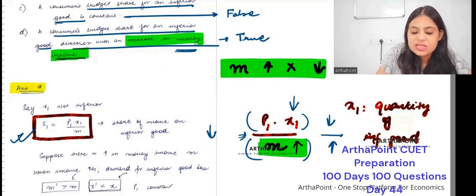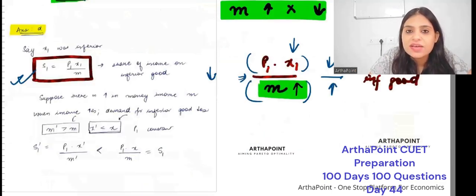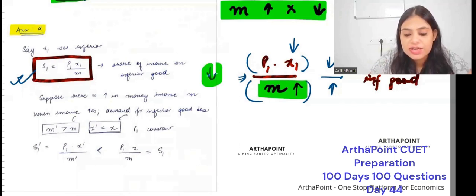So this is what I have done. That when there is increase in income, denominator is decreasing, numerator is increasing. Overall fraction is decreasing. So the share on inferior good is decreasing.